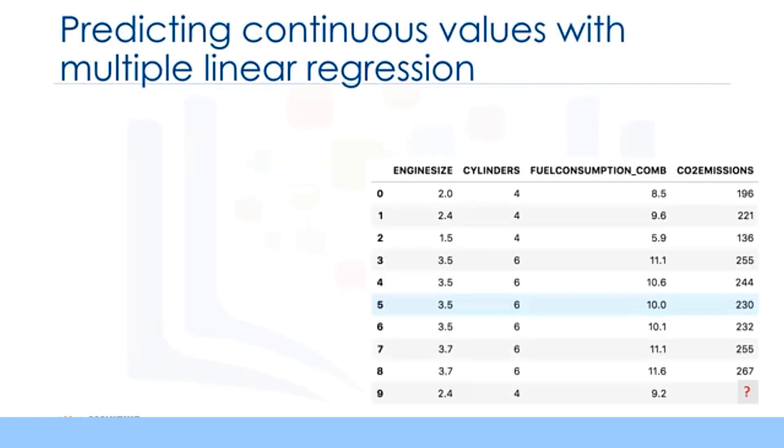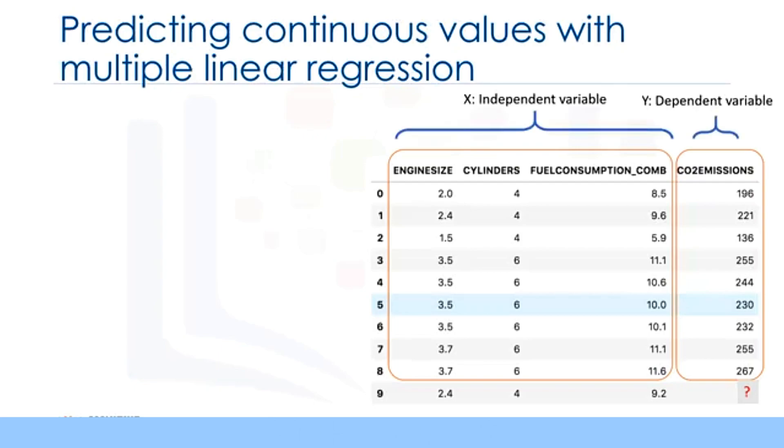As is the case with simple linear regression, multiple linear regression is a method of predicting a continuous variable. It uses multiple variables called independent variables or predictors that best predict the value of the target variable, which is also called the dependent variable. In multiple linear regression, the target value y is a linear combination of independent variables x. For example, you can predict how much CO2 a car might emit due to independent variables such as the car's engine size, number of cylinders, and fuel consumption.